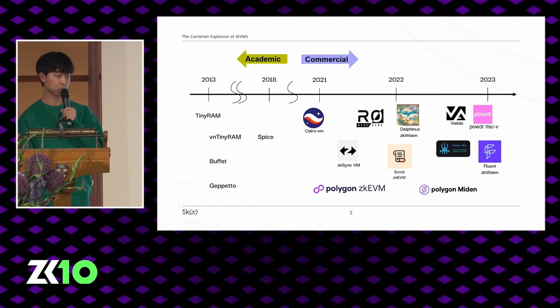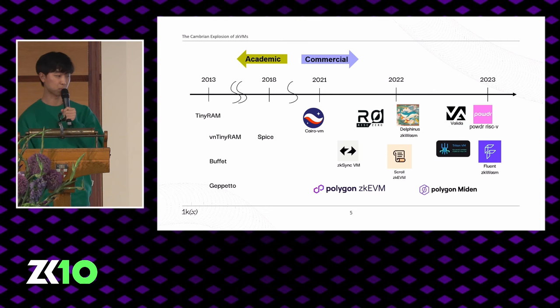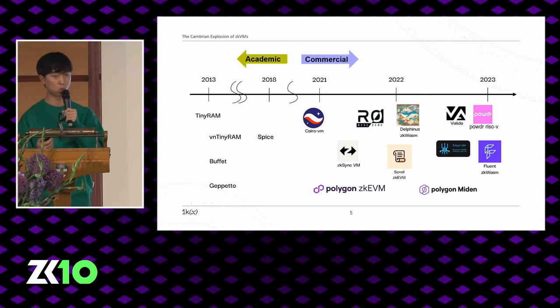There's a rich history in the development of ZKVMs — starting with TinyRAM in 2013, and then the first commercial work in 2021. In the past two years, there's especially been a lot of new ZKVMs tailored towards proving execution of existing and popular VMs like the EVM, WASM, or RISC-V.